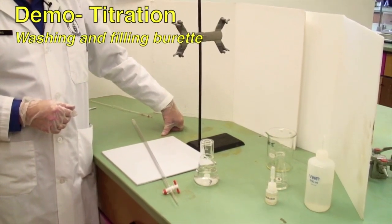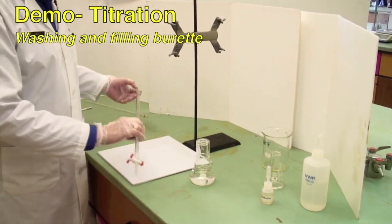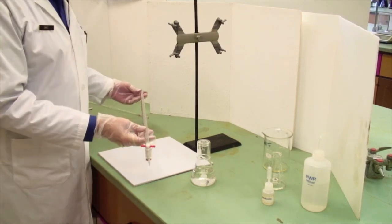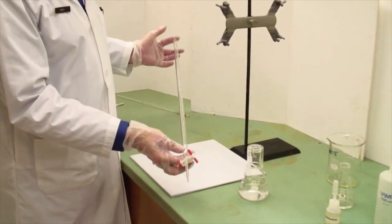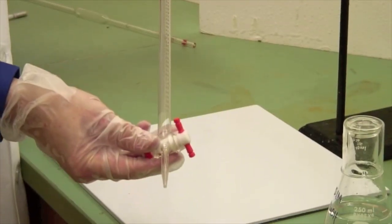Lastly, we come to titration, which uses burettes. Burettes come in various sizes. This one is typical. It's 50 mils long with a tap.